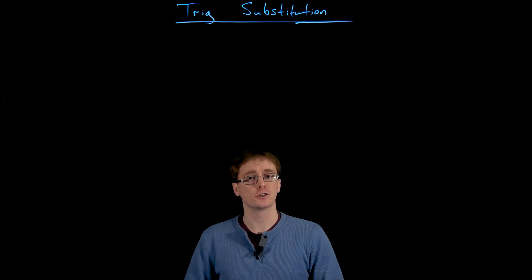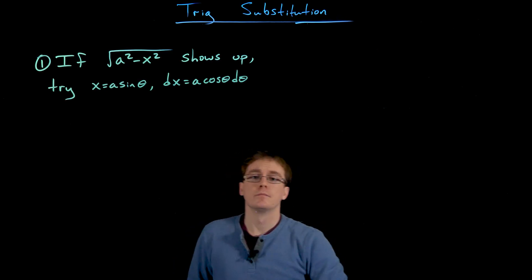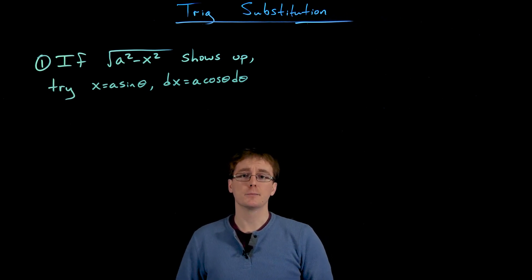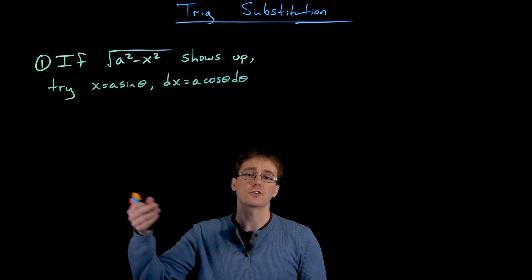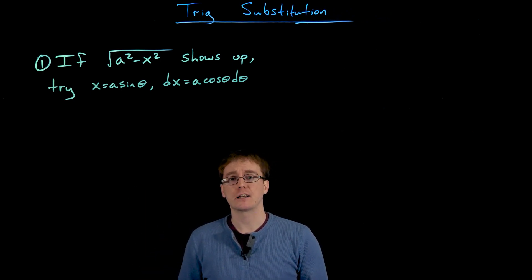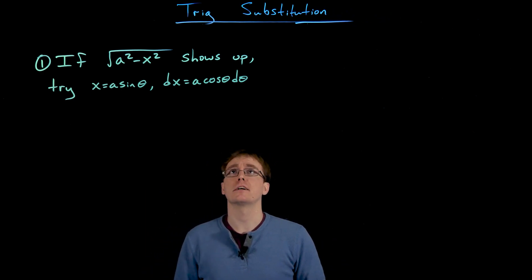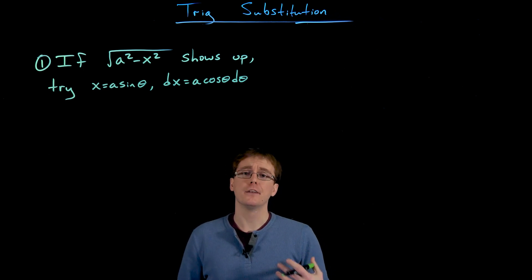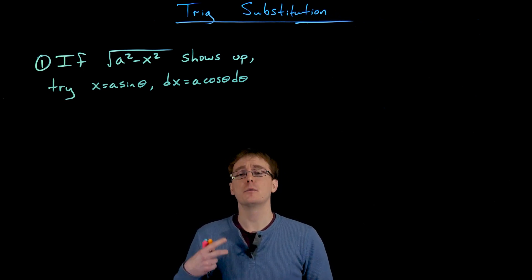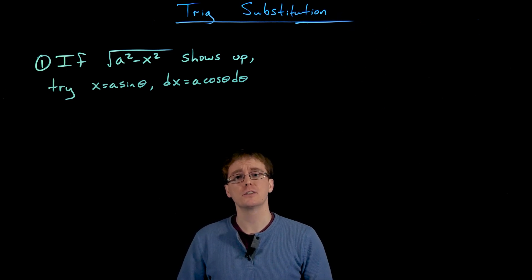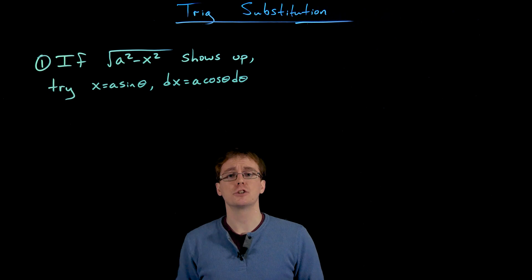We've already seen one in our first few examples — what we call a sine substitution. What we saw for sine substitutions was if we had a quantity like a² minus x², or the square root of a² minus x², or really some power of a² minus x² showing up in our integral, and none of our other integration techniques are really being effective, we might try a trig substitution — specifically a sine substitution.